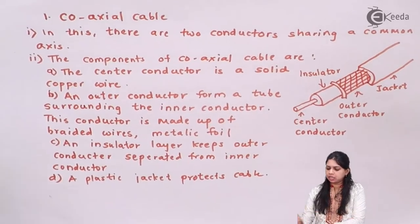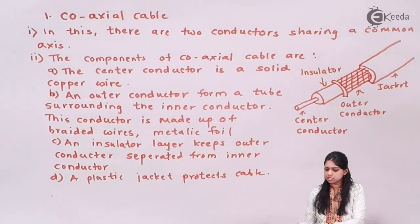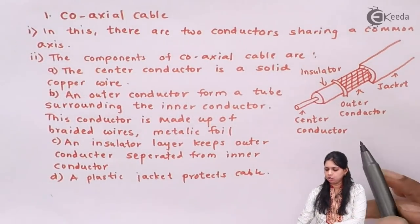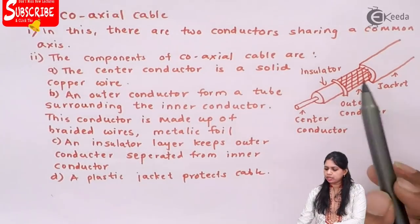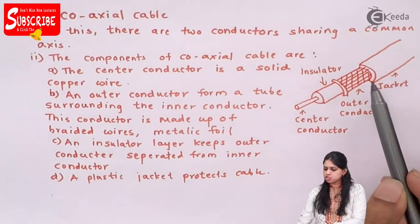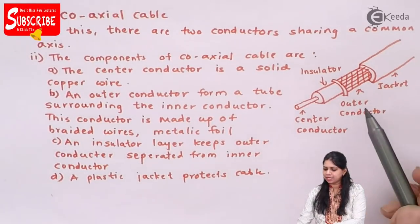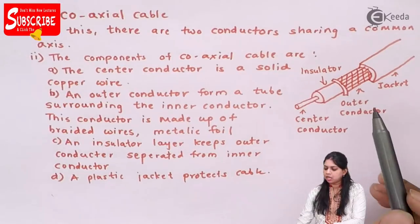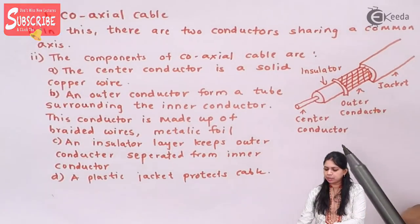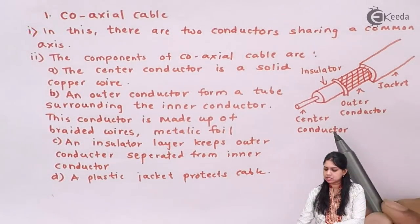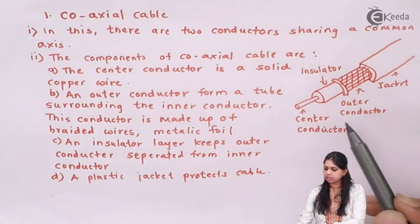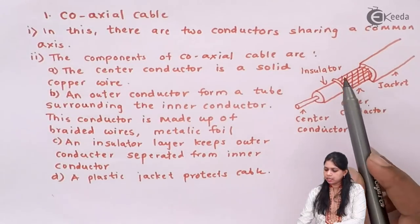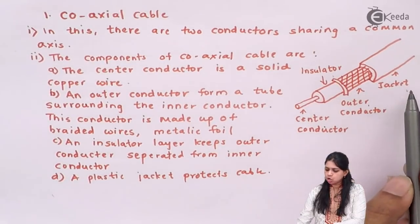This is how a coaxial cable looks like. There are two conductors which share a common axis in the coaxial cable. The components of the coaxial cable are: center conductor, outer conductor, insulator, and jacket.